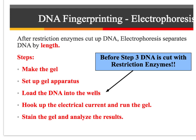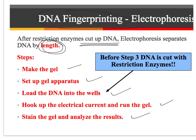The next thing to go over is gel electrophoresis. Gel electrophoresis basically allows us, after your DNA is cut, to separate out the DNA strands by length or by size. There are a few steps: you make the gel, set it up, load it, run an electrical current through it, and then stain and analyze the results.